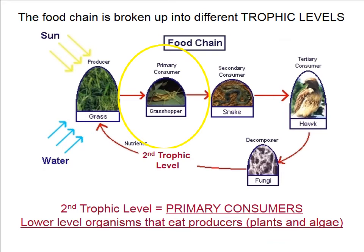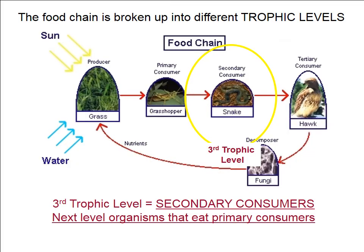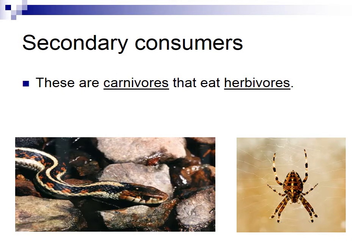Producers are the most important source of energy — without producers, everything would collapse. Primary consumers are the second trophic level — lower organisms that eat producers. We've got herbivores like bunnies, snails, and grasshoppers — all they do is eat plants. Secondary consumers are the third trophic level — the next level of organisms that eat primary consumers. Their main source of food is primary consumers. Examples include snakes, spiders, fish, and frogs. These are carnivores that eat herbivores.